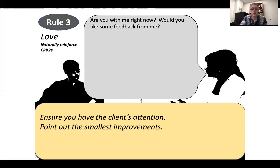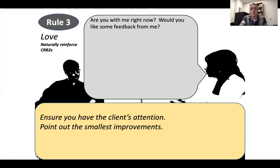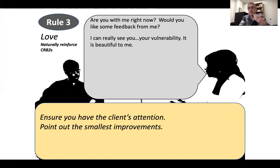Tip number two: point out even the smallest improvements in behavioral language. This is known as shaping. We could have stopped after his very first CRB2 and gone straight to rule three. You might say something like, 'I want you to know I can really see your vulnerability — it is beautiful to me.' You may feel uncomfortable saying that as a therapist, and we could talk about that. But this example is meant to be provocative in that way.